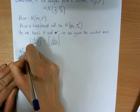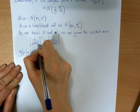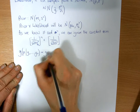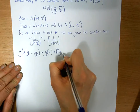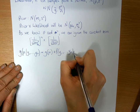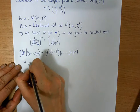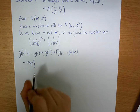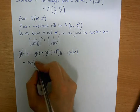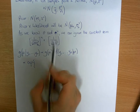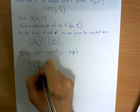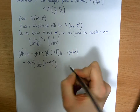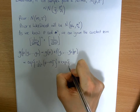We have g(mu | y_1, ..., y_n) proportional to the prior times the likelihood given the data. So we say it's proportional to the exponential part, ignoring the constant of our prior, which is of the form with respect to m and mu: minus 1 over 2s squared, times mu minus m squared, times the exponential of minus 1 over 2 times sigma squared over n, times mu minus y-bar squared.